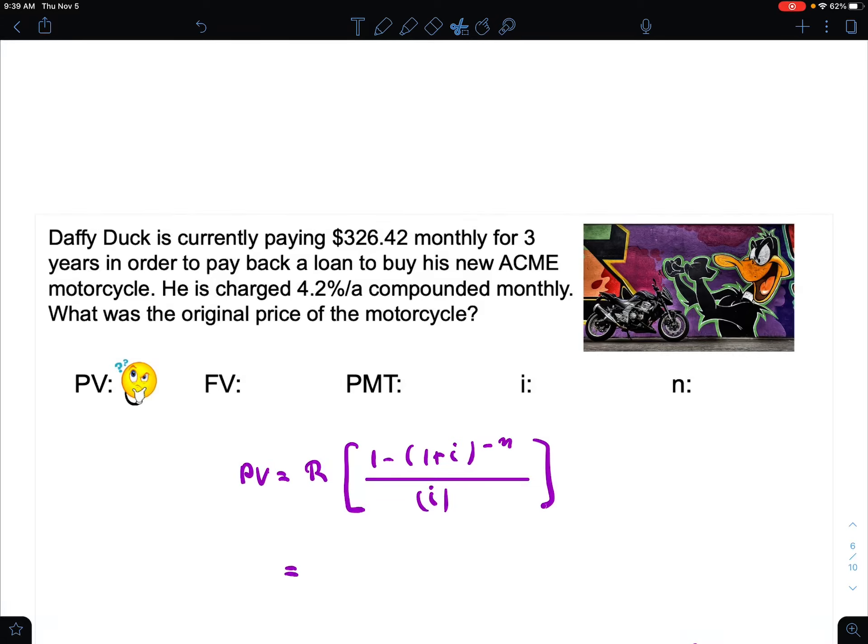Let's try one example with present value. Duffy Duck is currently paying $326.42 monthly for 3 years to pay back a loan to buy his new ACME motorcycle. He is charged 4.2% per year, compounded monthly. What was the original price of the motorcycle?